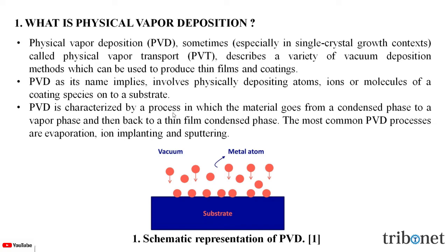PVD is characterized by a process in which the material goes from a condensed phase to a vapor phase and then back to a thin film condensed phase. The most common PVD processes are evaporation, ion plating, and sputtering. In Figure 1, we can see the schematic representation of Physical Vapor Deposition, where metal atoms in a vacuum medium are depositing on a substrate.